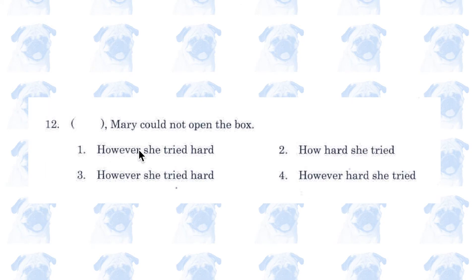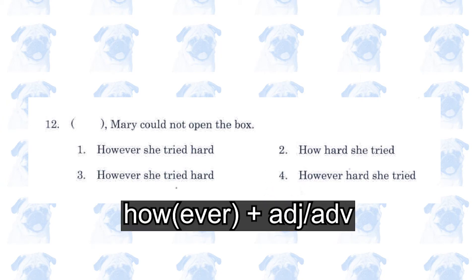Number 12. 'However she tried hard / how hard she tried / however she tried hard / however hard she tried.' Whoever made this exam was extremely careless because there are two identical choices. The correct answer is number 4: 'however hard she tried'. The WH word 'however' must be followed by either an adjective or an adverb — in this case, the adverb 'hard'.